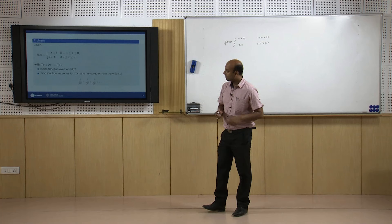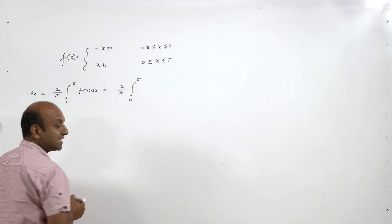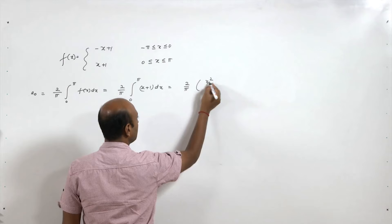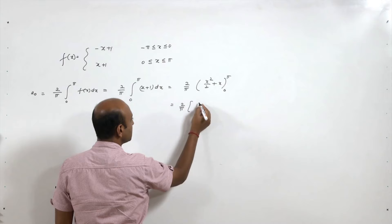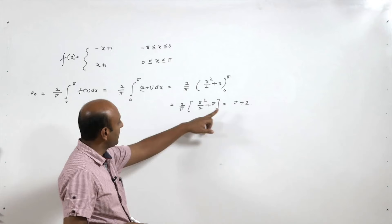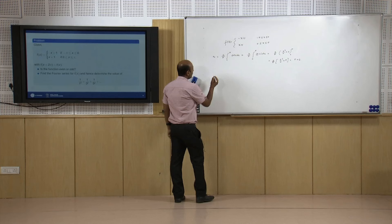For a₀: a₀ = (2/π) ∫₀^π f(x) dx = (2/π) ∫₀^π (x+1) dx = (2/π) [x²/2 + x] from 0 to π = (2/π)(π²/2 + π) = π + 2.